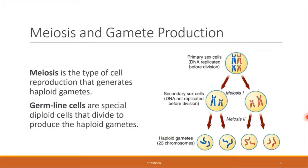Meiosis is the special type of cell reproduction that generates the haploid gametes. The type of cells that undergo meiosis are actually diploid cells called germline cells or primary sex cells. So the process starts out with a diploid cell, and then that diploid cell undergoes divisions that eventually reduce the chromosome content in half.